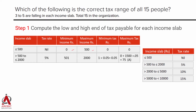Slab 2: income greater than 500 and up to 2000. Taking integer rupees, the minimum income is 501 and maximum is 2000. At the low end (income = 501): no tax on the first 500, then 5% on the extra 1 rupee = 5 paise. At the high end (income = 2000): no tax on first 500, then 5% on 1500 = 75 rupees. So minimum tax in this slab is 5 paise and maximum is 75 rupees.